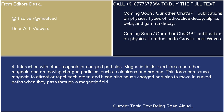4. Interaction with other magnets or charged particles. Magnetic fields exert forces on other magnets and on moving charged particles, such as electrons and protons. This force can cause magnets to attract or repel each other, and it can also cause charged particles to move in curved paths when they pass through a magnetic field.